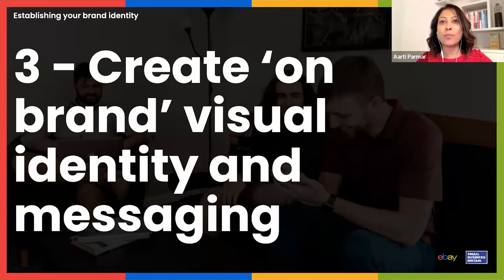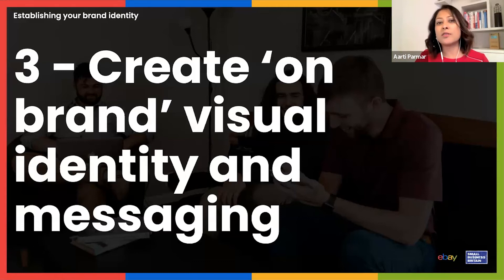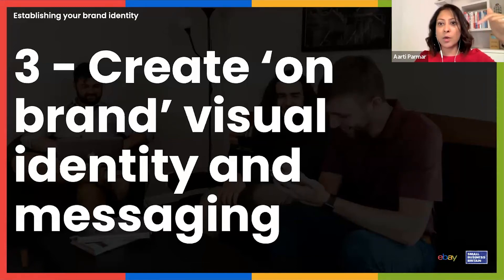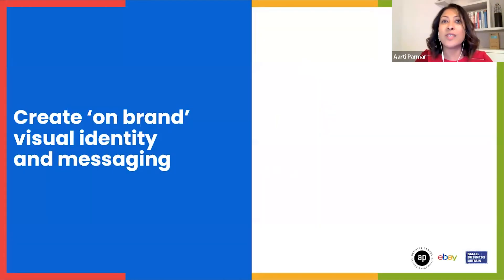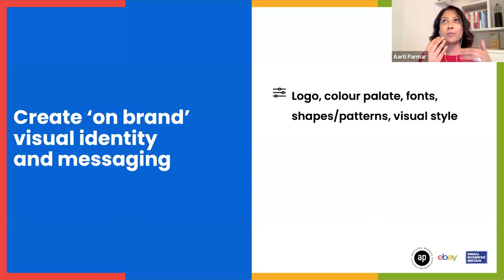Number three: create on-brand visual identity and messaging — and I say 'on brand' for a reason. A lot of businesses start up and in the excitement jump straight to getting a logo, a website, and social media. Then they wonder why they're blending in and why everyone seems to be saying similar things. That's why it's really important to do step one — discover and define your brand first — because only then can you create an on-brand visual identity and messaging.